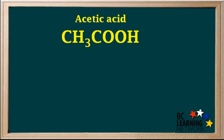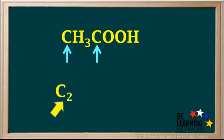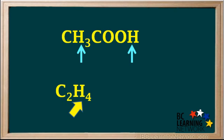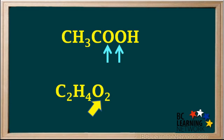At this point, we can make the problem slightly easier by simplifying the formula for acetic acid. The formula has a total of two carbon atoms, so we write C2, four hydrogen atoms, so we write H4, and two oxygen atoms, so we write O2.